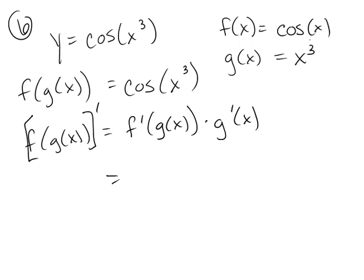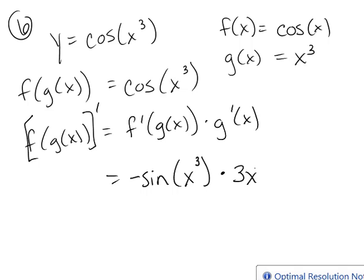So here, the derivative of the outer function, the derivative of the cosine, is negative sine in terms of the inner function, so you've got to rewrite the x cubed, times the derivative of the inner function, which is 3x squared.